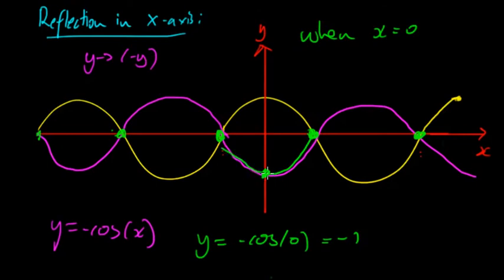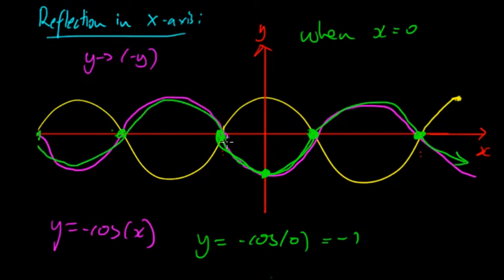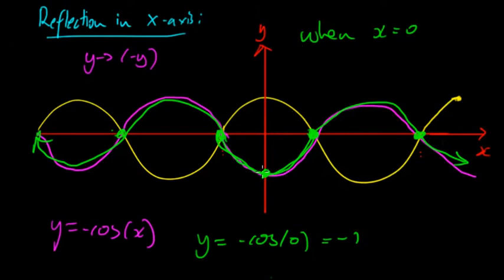Once you know that shape, you can continue the cosine pattern from there. Rather than thinking explicitly about reflections, it's often easier to: work out the x-intercepts, substitute in one or two points, confirm the magnitude, and then graph the equation from there. Make sure when substituting you're using either the x-intercepts, the minimum, or the maximum points.